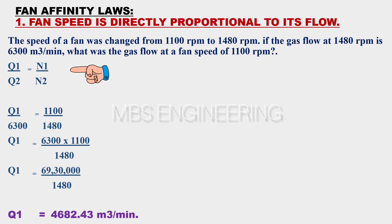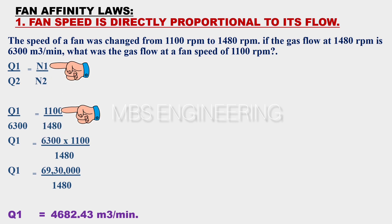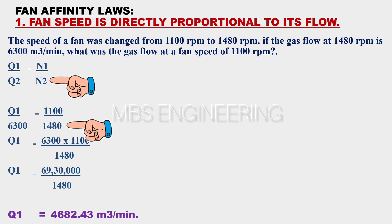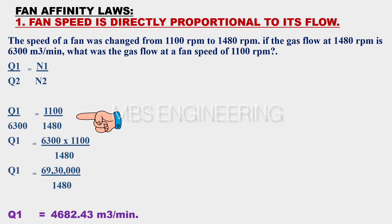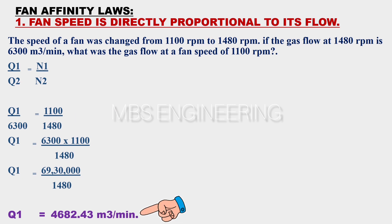Where Q1 and Q2 are flow in cubic meters per minute. The given data are: flow Q2 is 6300 cubic meters per minute, speed N1 is 1100 RPM, and speed N2 is 1480 RPM. We need to calculate Q1. Q1 divided by 6300 equals 1100 divided by 1480. Please refer to the below step-by-step calculations. The obtained flow Q1 is equal to 4682.43 cubic meters per minute.